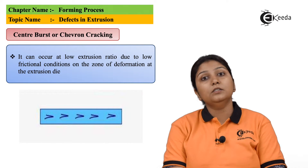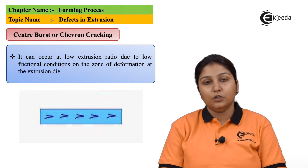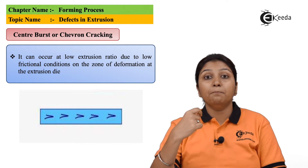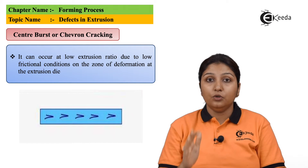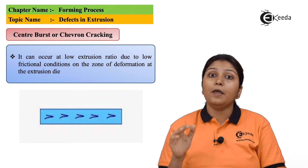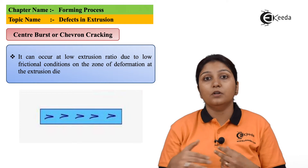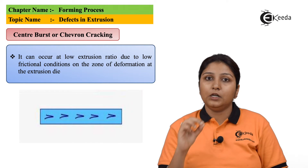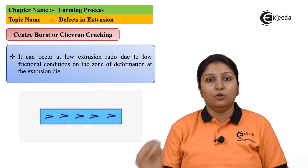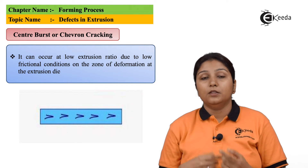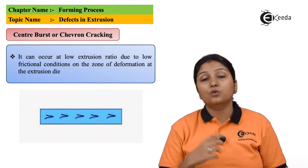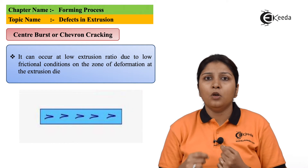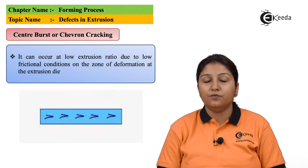This defect is center burst. You can see that in the center there are certain bursts. It occurs due to a low extrusion ratio — the extrusion ratio is low as well as the frictional condition is low. In this way the center of your extruded product gets bursted, or small bursts get formed.